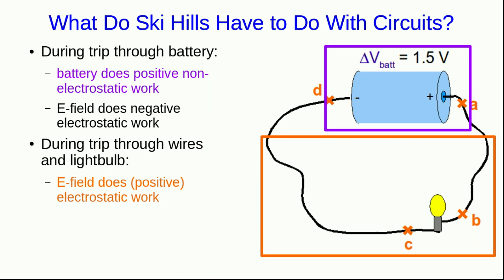It's just like the ski hill, except we've replaced gravitational forces with electrostatic ones. And in analogy to the work per unit mass, we can talk about the work per unit charge. But we've already seen that the potential difference, say from point D to point A on this diagram, is just the negative of the electrostatic work per unit charge.